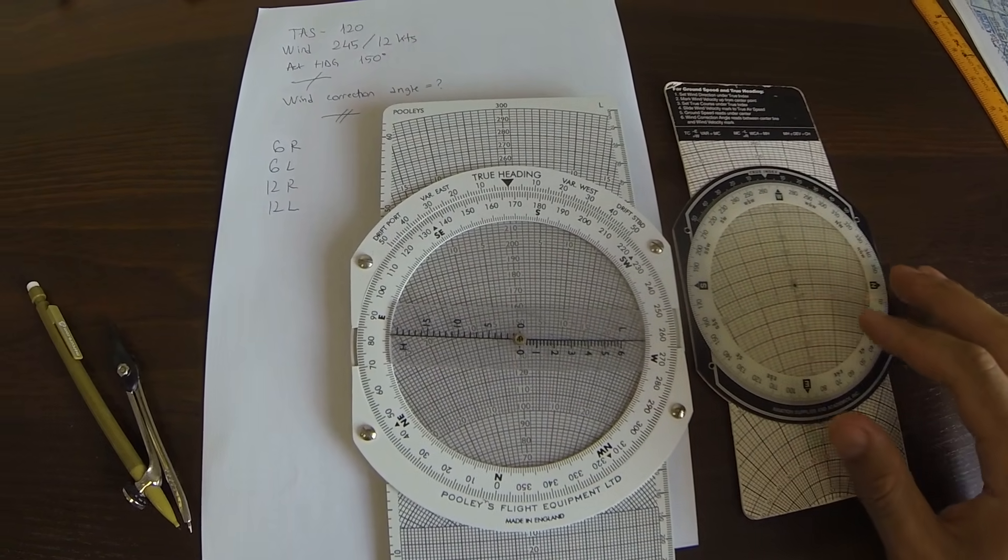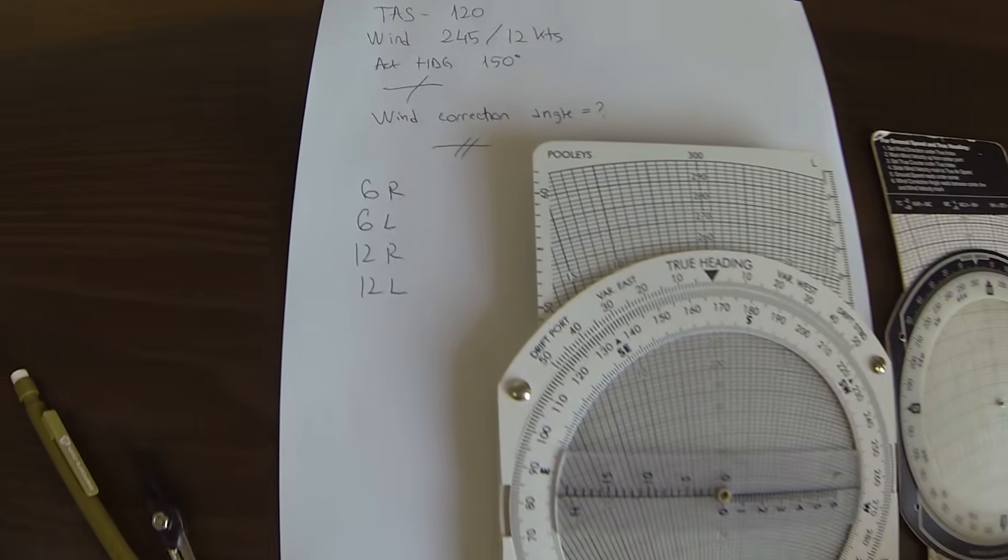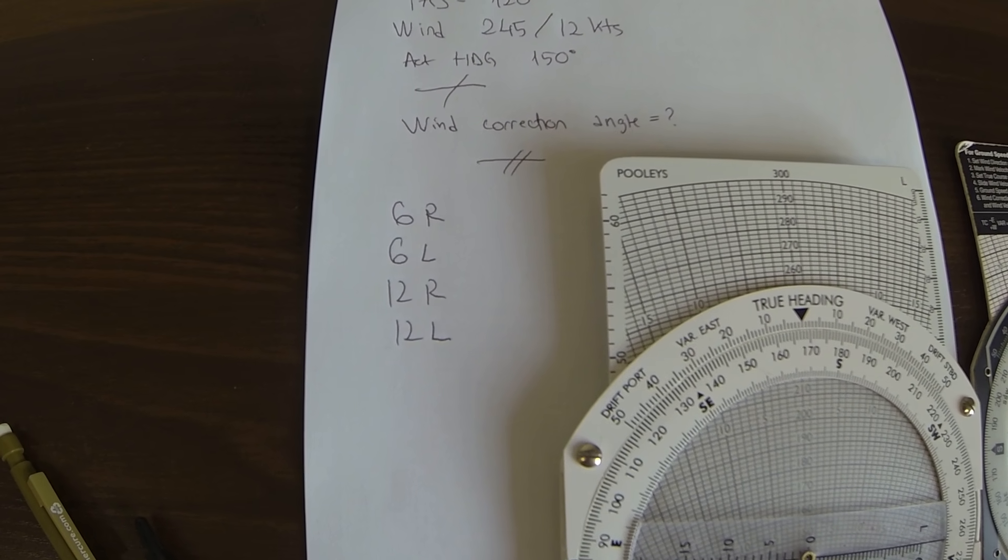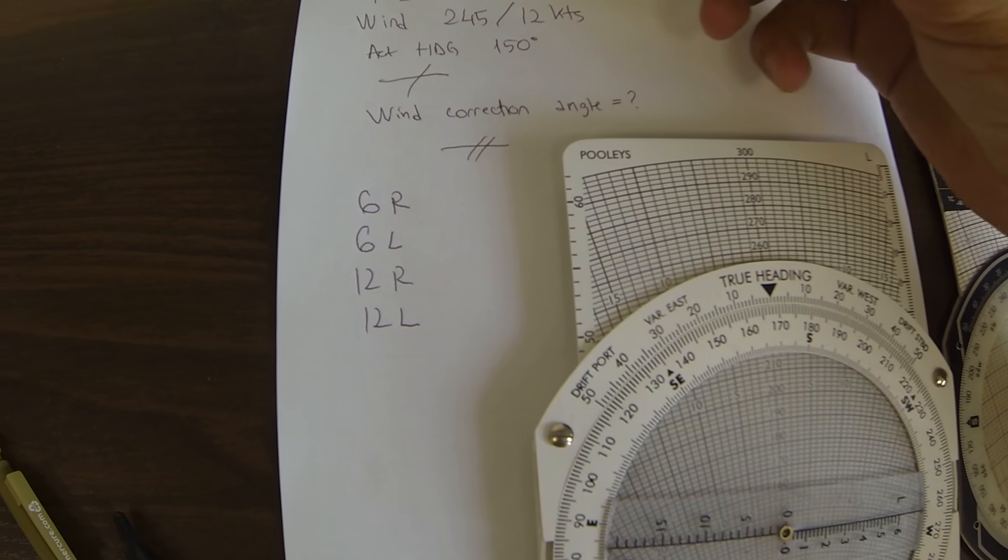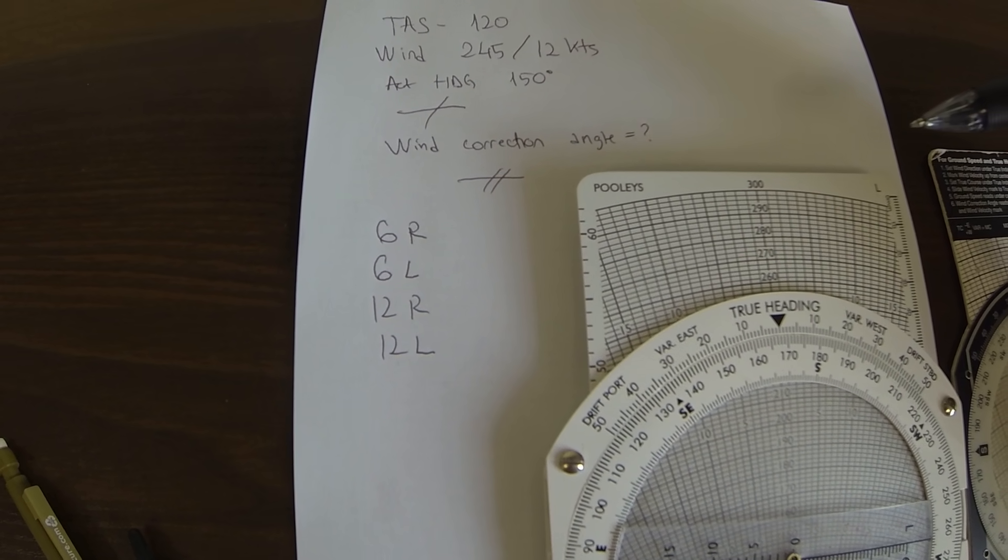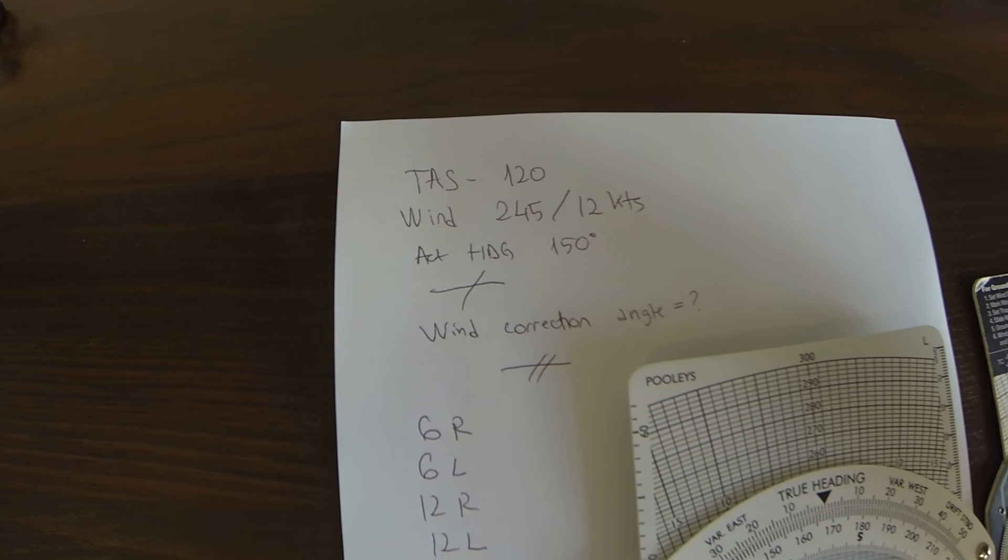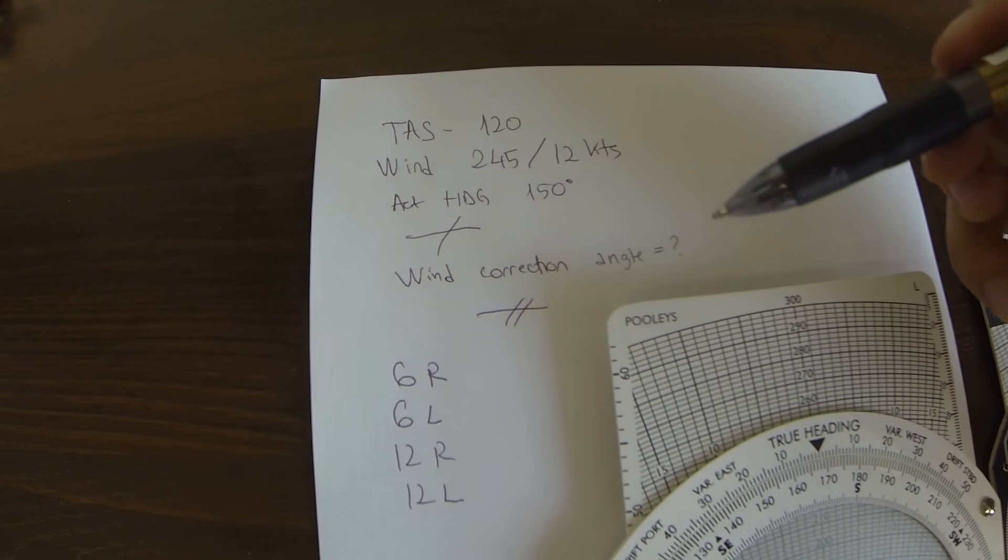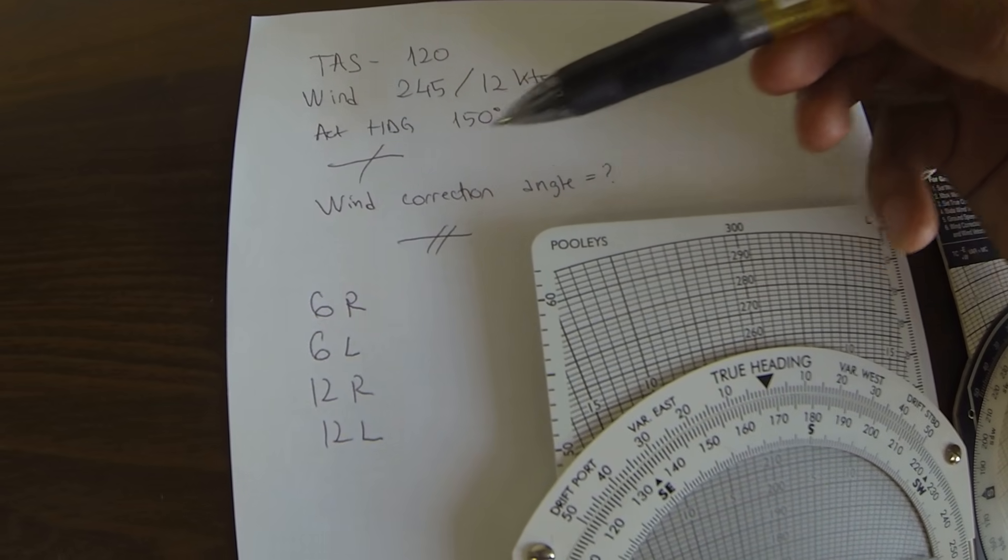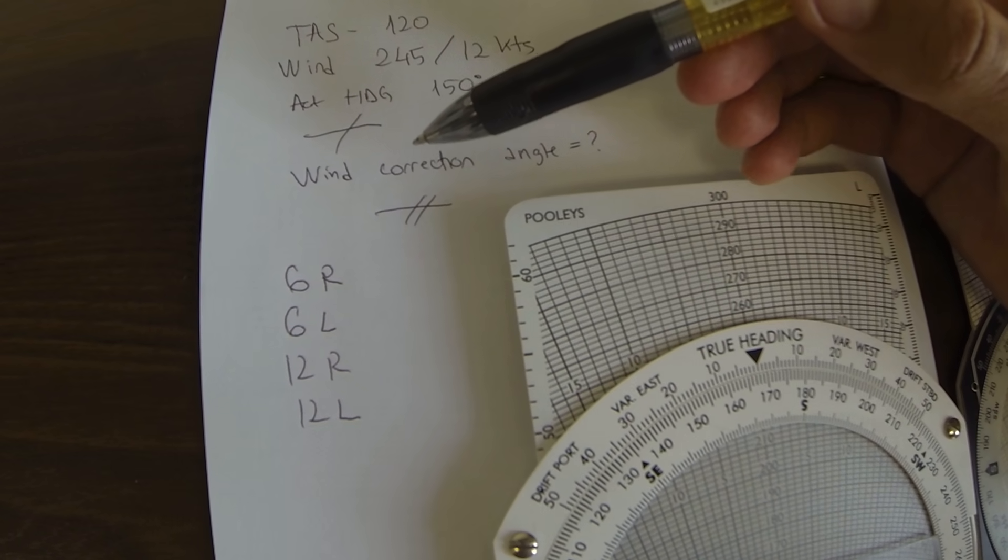Hello once again, today we're going to solve this problem for general navigation. We have TAS true airspeed 120, wind 245 12 knots from 245, actual heading 150, and they're asking us what is the wind correction angle: 6 right, 6 left, 12 right, or 12 left?